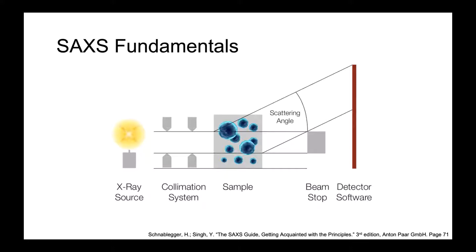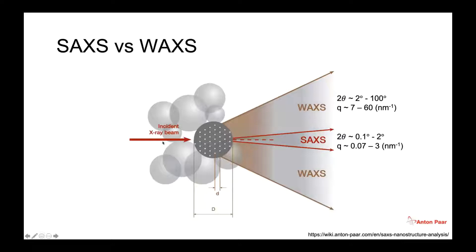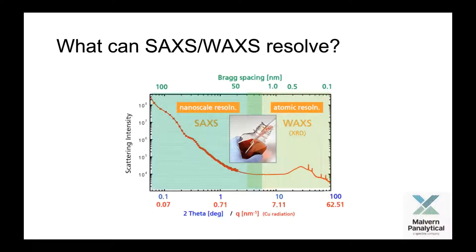On the scattering side, incident x-rays scatter off your sample at different characteristic length scales. Most of the time people run SAXS to detect what they want, but by bringing the detector in a little closer you can detect x-rays scattered at wider angles — that's WAXS — giving you complementary information. SAXS gives you nanoscale resolution, which is important for nanoscale materials, while WAXS complements that with atomic resolution information.